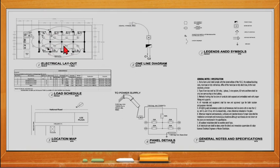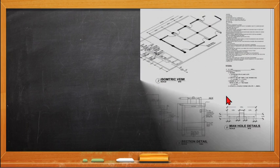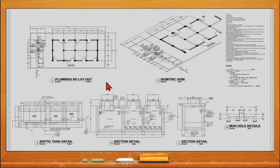Next we have the electrical plan. It will have the electrical layout containing both the power and the lighting layout. You have the one-line diagram, the legends and symbols, the load schedule, the location map, the panel details, and the general notes and specifications which contain the standards that the installer must follow for the electrical installation.